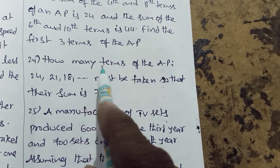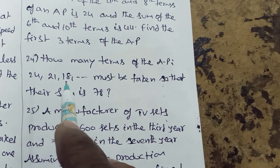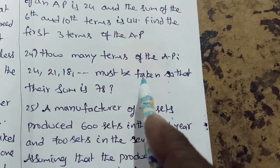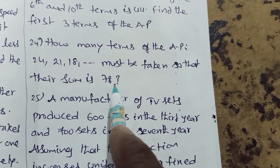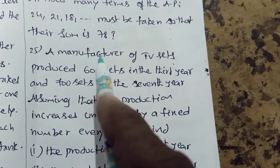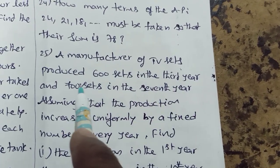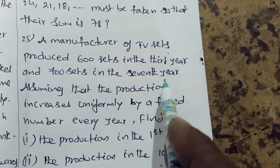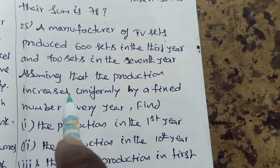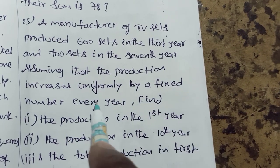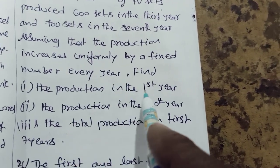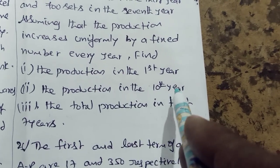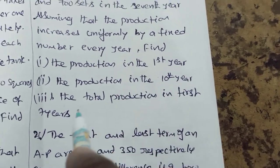How many terms of the AP 24, 21, 18 and so on must be taken so that their sum is 78? A manufacturer of TV sets produced 600 sets in the 3rd year and 700 sets in the 7th year. Assuming that the production increases uniformly by a fixed number every year, find the production in the 1st year, the production in the 10th year, and the total production in the first 7 years.